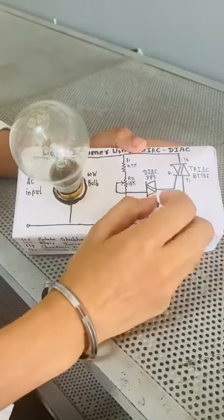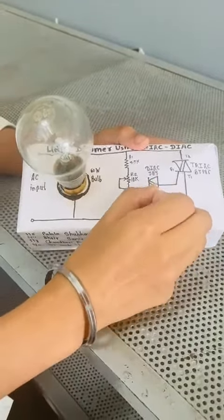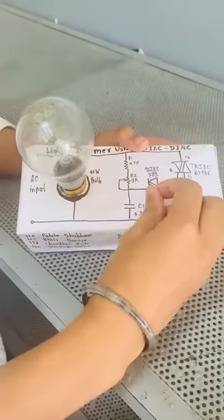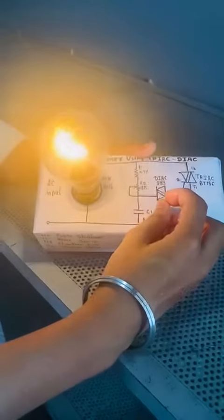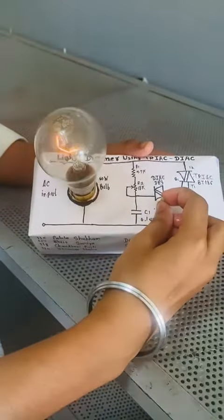So as we vary the potentiometer, the intensity of bulb also varies. You can see here varying the potentiometer, the intensity of bulb also varies. Thank you.